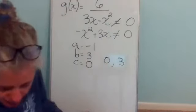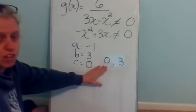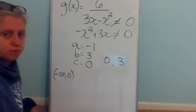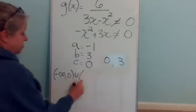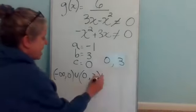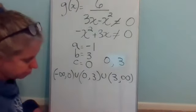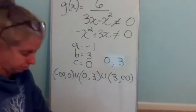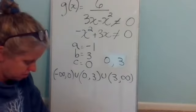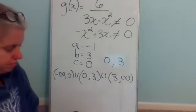Zero and three are the numbers that X cannot equal. In interval notation, I need to show all numbers on the number line except zero and three. All numbers below zero: negative infinity to zero. In union with numbers between zero and three. In union with all numbers above three: three to positive infinity.